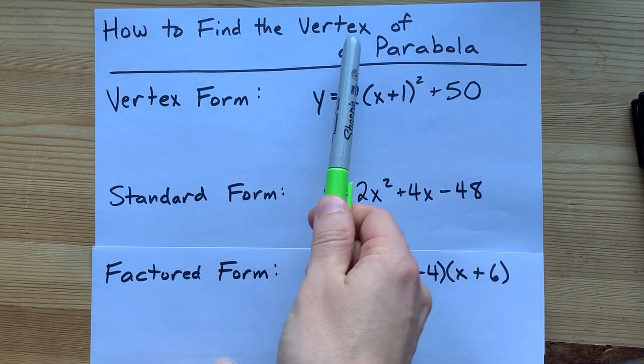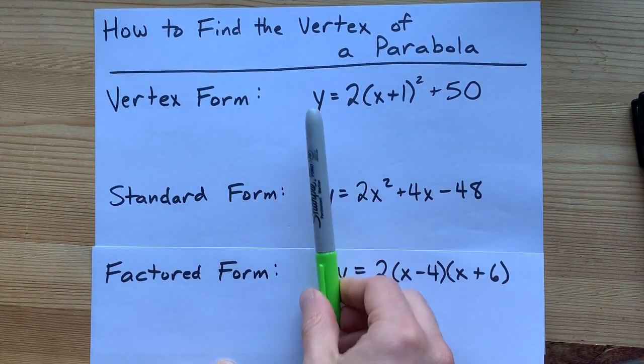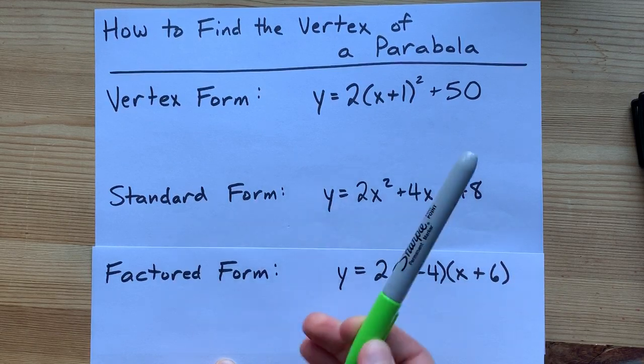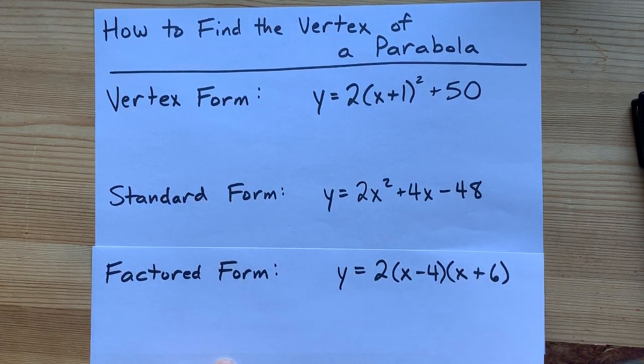How do you find the vertex of a parabola, given its equation? Well, there's three different forms that the equation could be in.